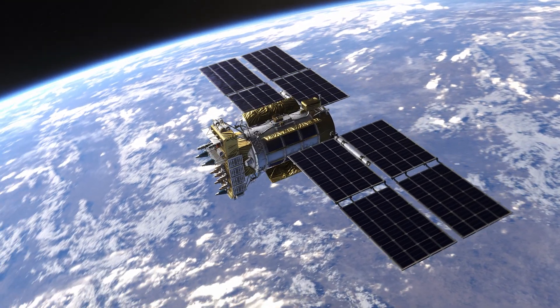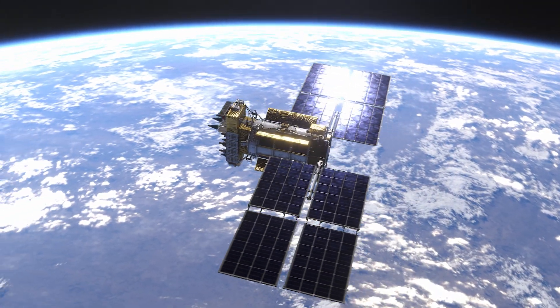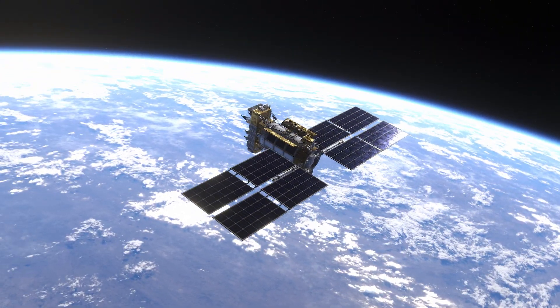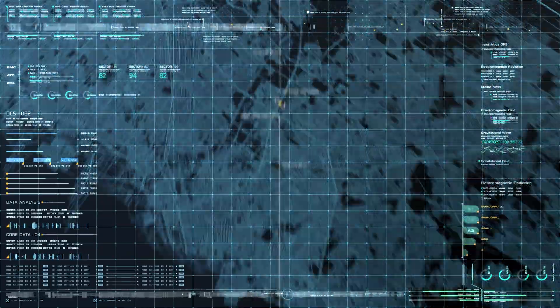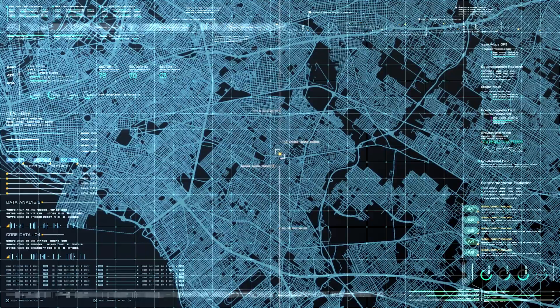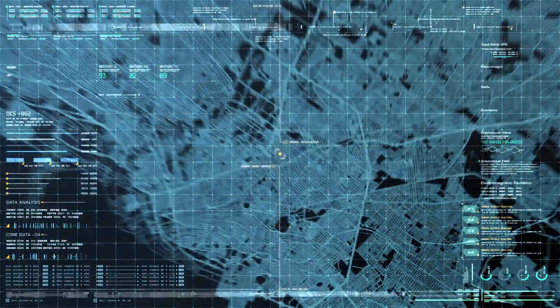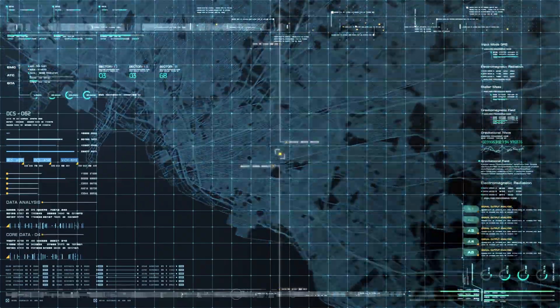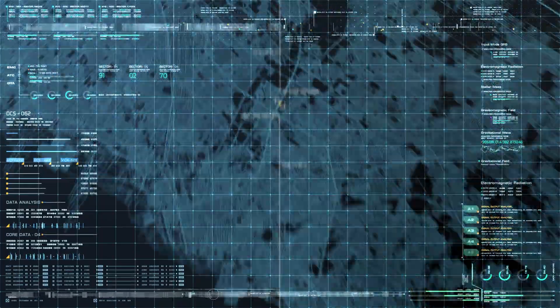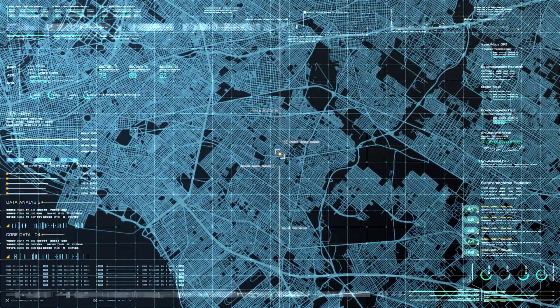The result? Time on these satellites actually runs slightly faster than it does down here on Earth. But here's where it gets interesting. If we didn't account for this tiny difference in time, your GPS would be off by several kilometers every day. Without correcting for time dilation, your navigation system would lead you way off course.